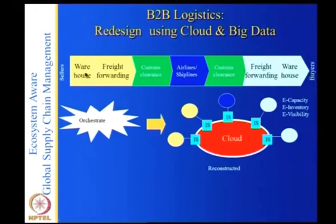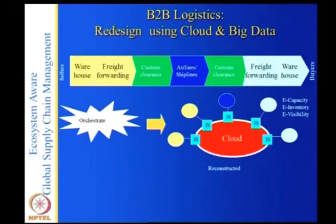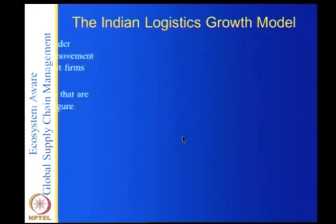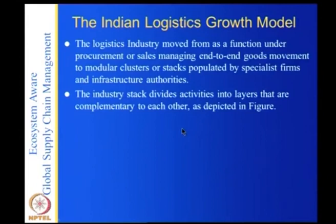If you have to hire two or three players across this chain, what is the relationship between the players so that they collaborate and your job is done in a more cooperative way? A collaborative network can be formed using cloud and related technologies. The B2B chain can be orchestrated using cloud and big data. Now let us look at another logistics chain that happens in emerging markets like India.